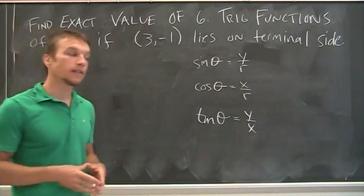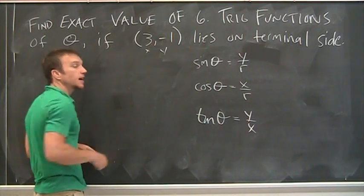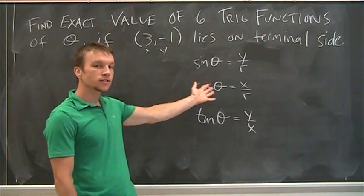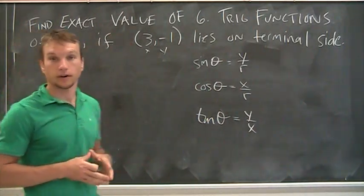y over r, cosine is x over r, tangent is y over x, defined in the xy plane. So what's r, right? That's the first thing we don't have. I mean, you should hopefully realize that that's x and that's y. So really, I could do the tangent right now. That's easy. Y over x, just by definition, is negative one-third, right?